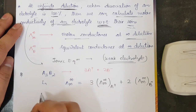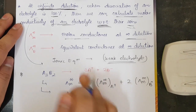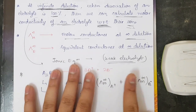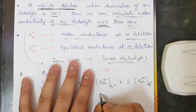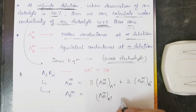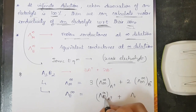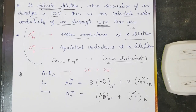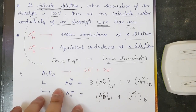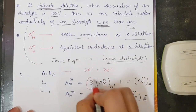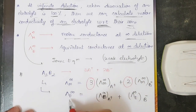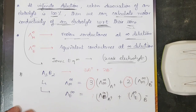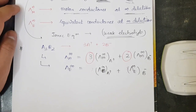Now if instead we calculate λe∞, then the coefficients 3 and 2 would NOT matter. The answer would simply be λe∞(A⁺) + λe∞(B⁻). So the key point: when calculating λm∞ you must include the stoichiometric coefficients, but when calculating λe∞ you do NOT include any coefficients — you directly add the ionic equivalent conductances.